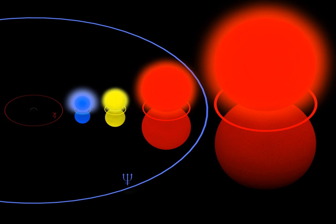Further reading includes work by I.J. Sackman and A.I. Boothroyd: 'Our Sun V: A bright young Sun consistent with helioseismology and warm temperatures on ancient Earth and Mars,' published in The Astrophysical Journal.